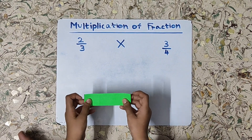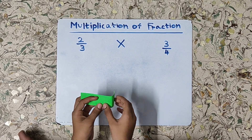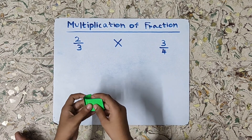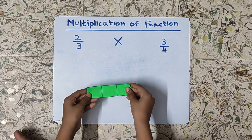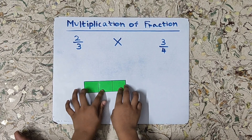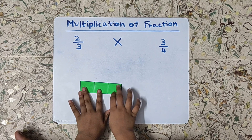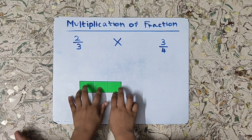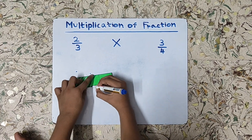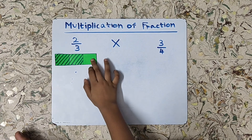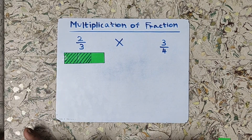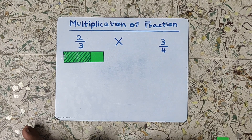Now we will fold it into three equal parts. Now unfold the paper. So see, friends, we have three equal parts: one, two, and three. Now we will shade two parts among these three parts because the numerator is two. So now this paper represents two-thirds.